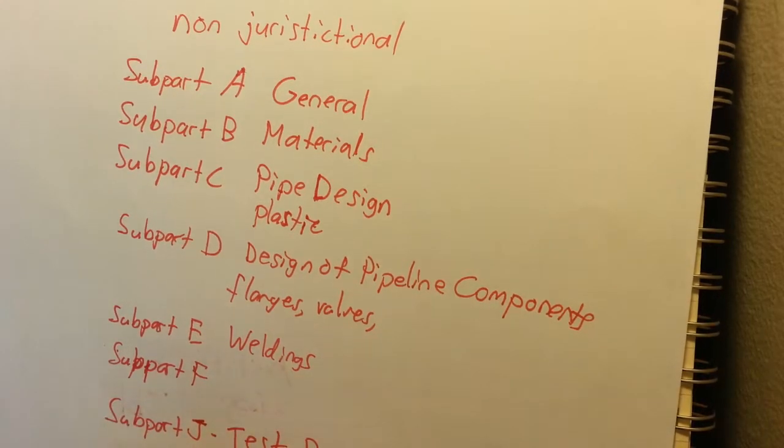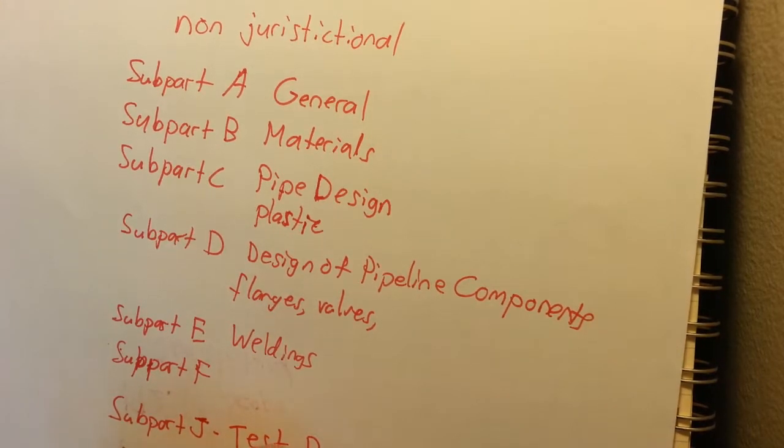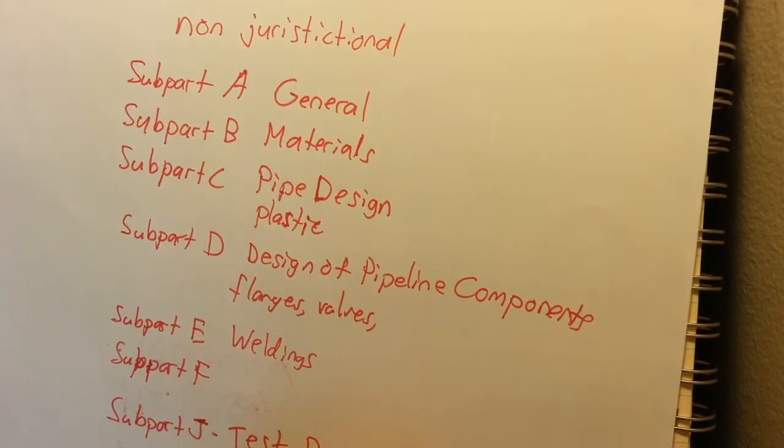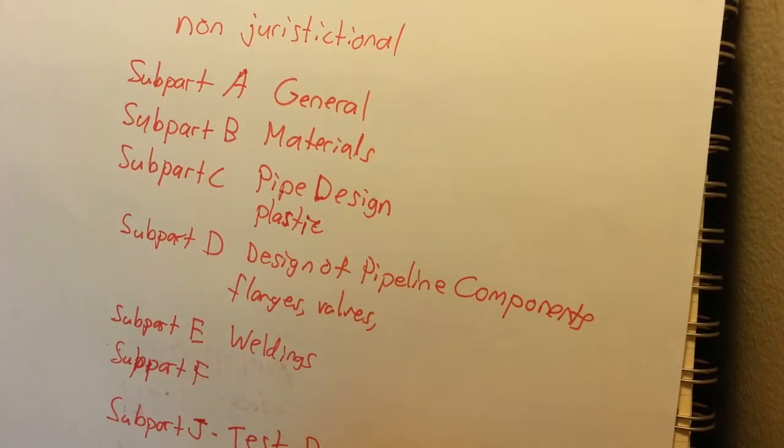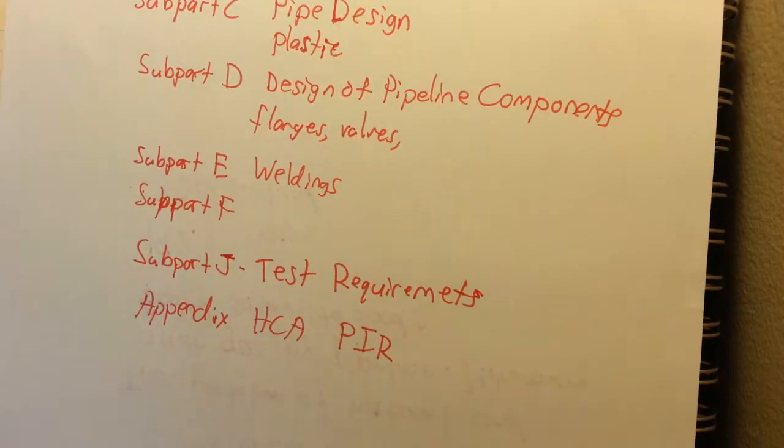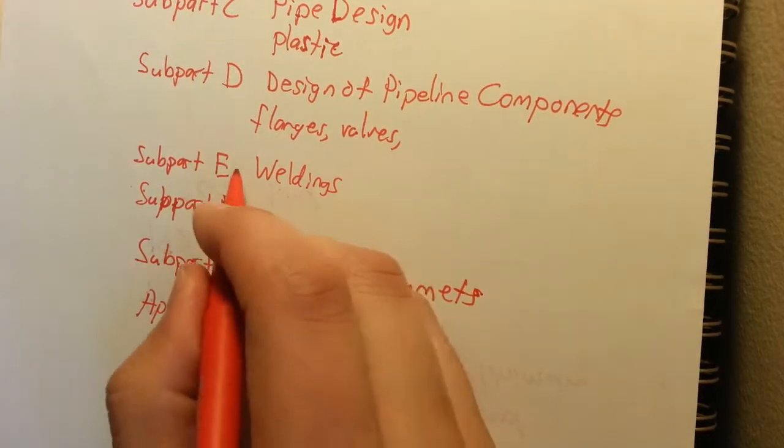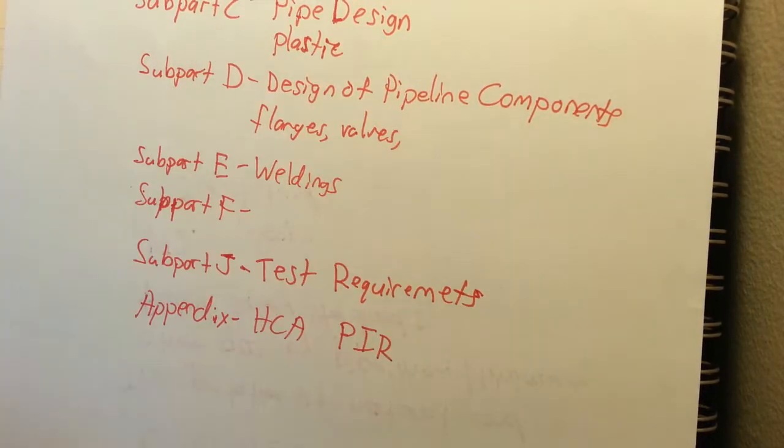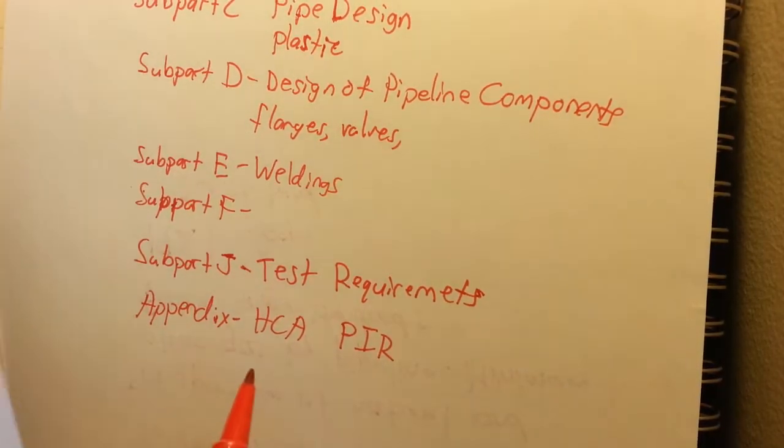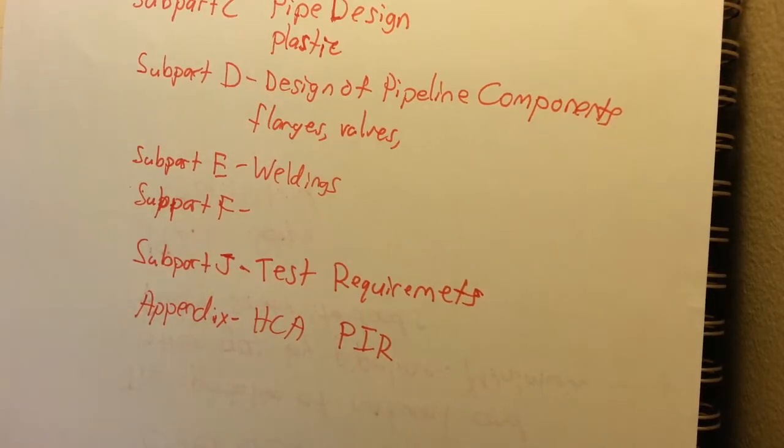And then the appendix at the end. That goes over, it's got different charts. It's got HCA charts and then potential impact radius charts. And that goes along with class locations. There's a section, I believe it's in general, that goes over class locations too. So that's also very important.